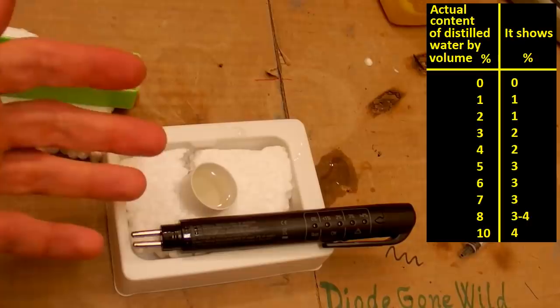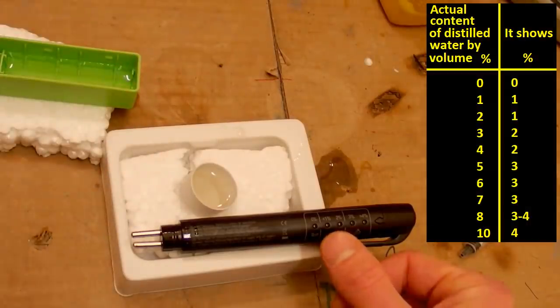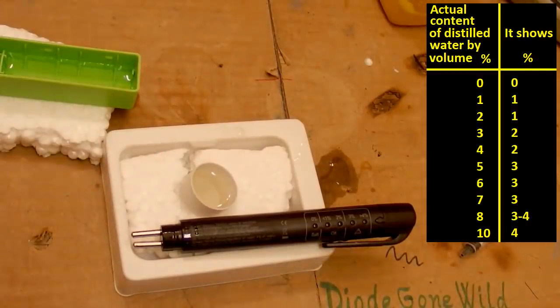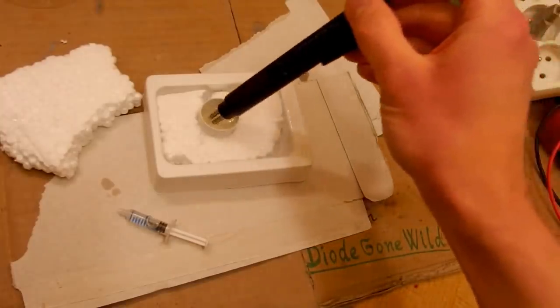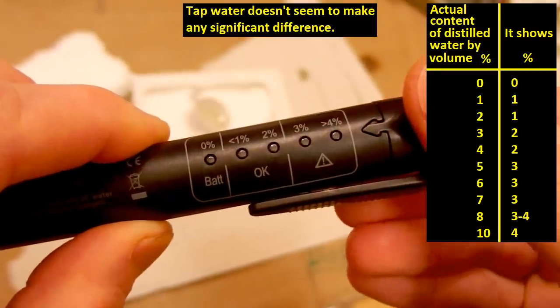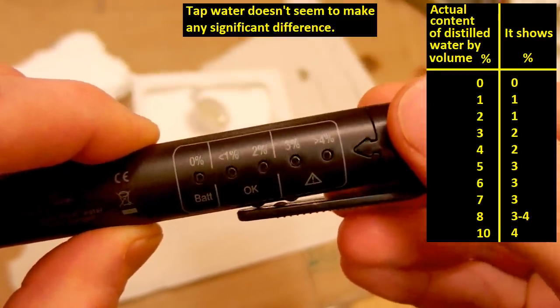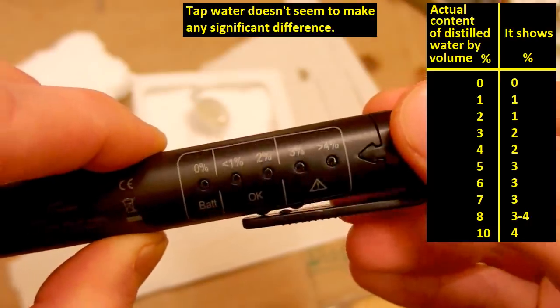Or maybe my testing technique is wrong? Should the percentage be by weight? Or should I have tried tap water? So let's quickly repeat the experiment with tap water. So it does measure something but the reading has to be multiplied by two to get the actual water content, very roughly.